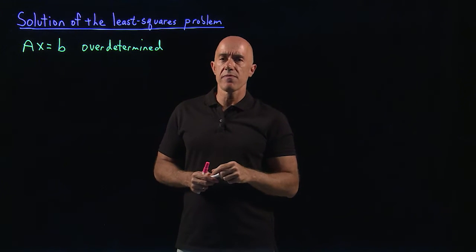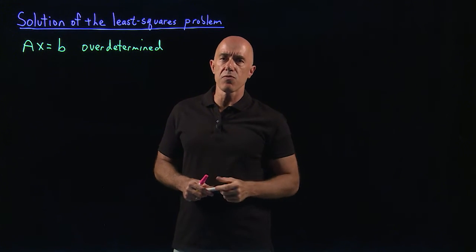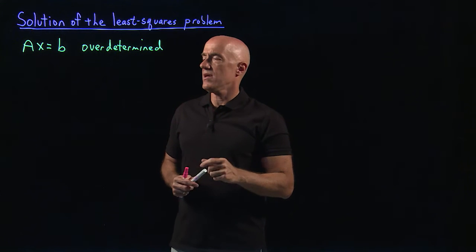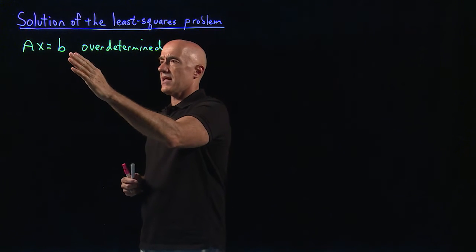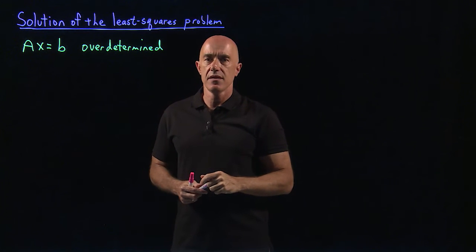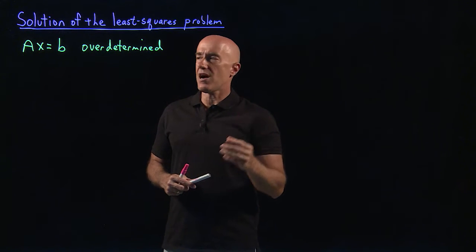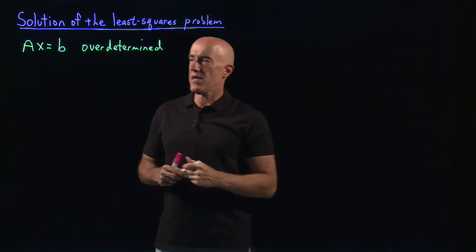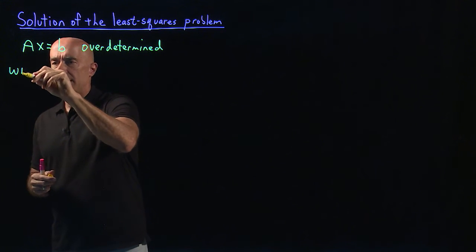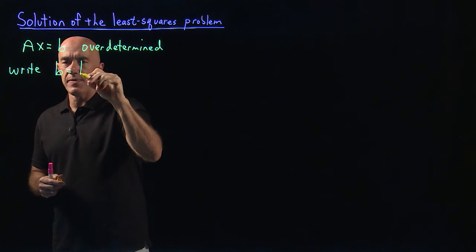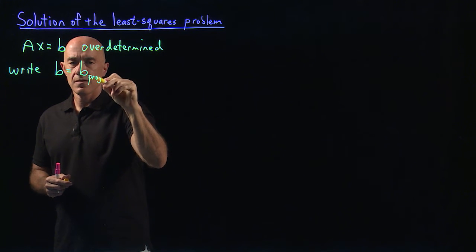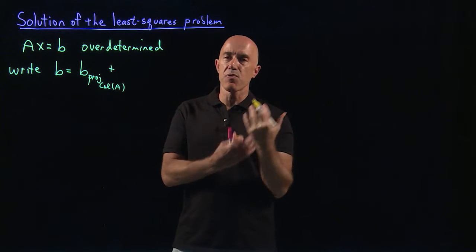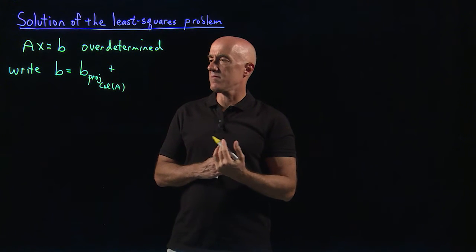The unknowns in the least squares problem are the y-intercept and the slope of the unknown line. From a vector space point of view, that means that b is not in the column space of A. So what we want to do is solve the problem where we project b onto the column space of A. We can write b as the part projected onto the column space of A plus the piece of b that is perpendicular or orthogonal to the column space of A.